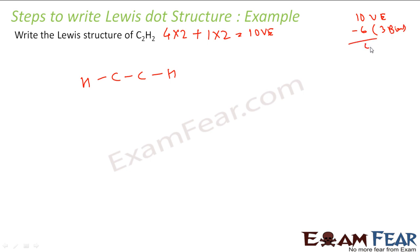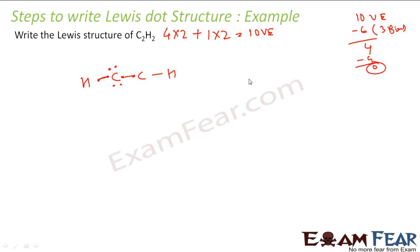So we have 4 valence electrons remaining. Let us try to satisfy this carbon. This carbon has now 4 electrons — 1, 2, 3 and 4. To be happy, it needs 4 more. So we gave 4 electrons to this carbon. So we are left with 0 valence electrons and this carbon is not happy.